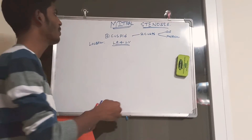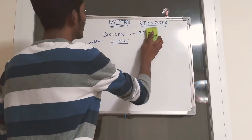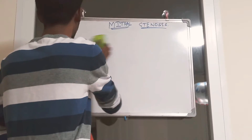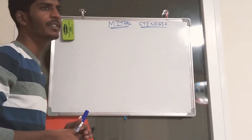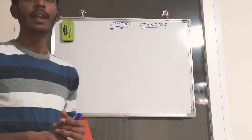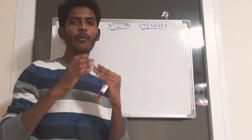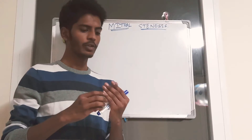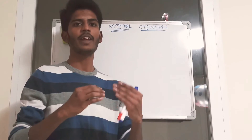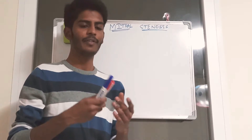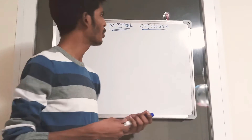What happens in mitral stenosis? We should first understand what stenosis means. Stenosis is nothing but narrowing of the valve space. When there is a narrowing, there is not enough space for blood to move from the left atria to the left ventricle.